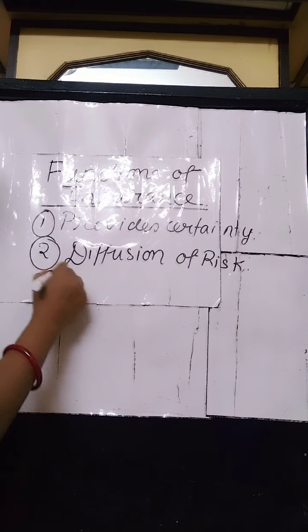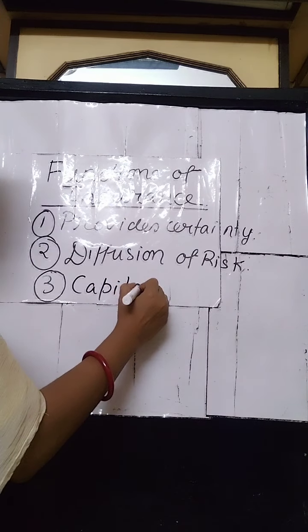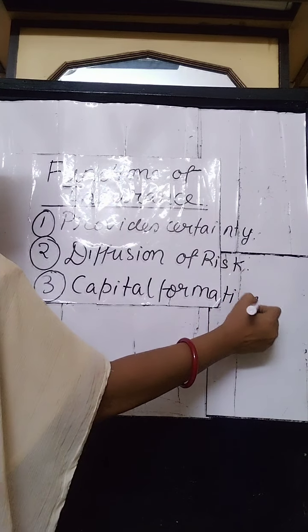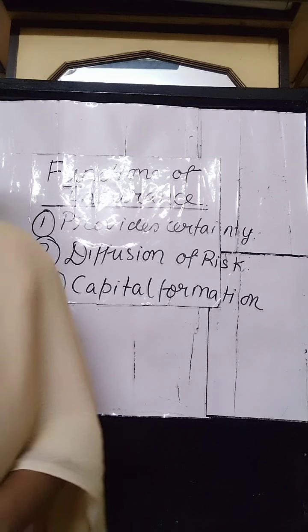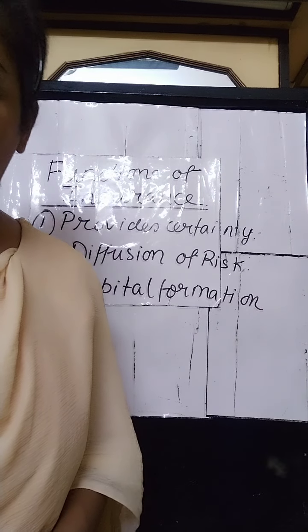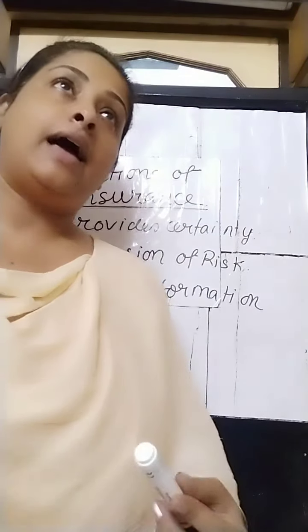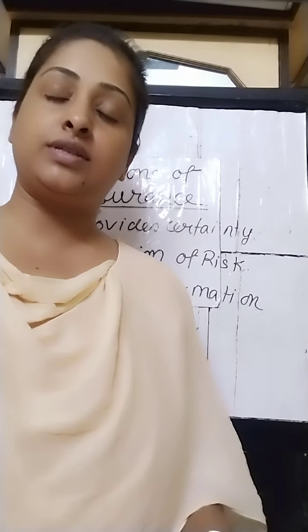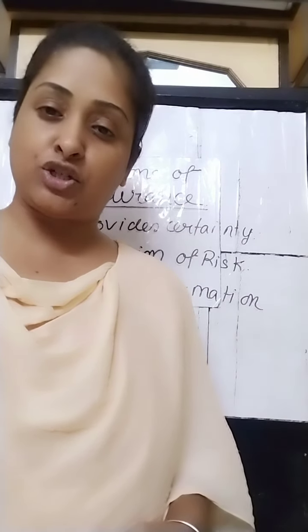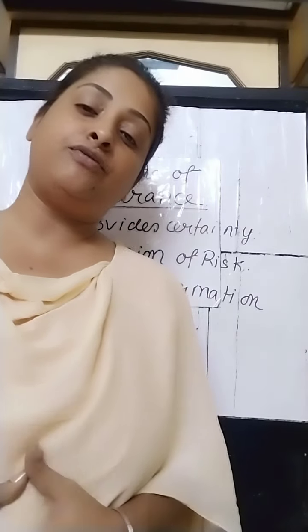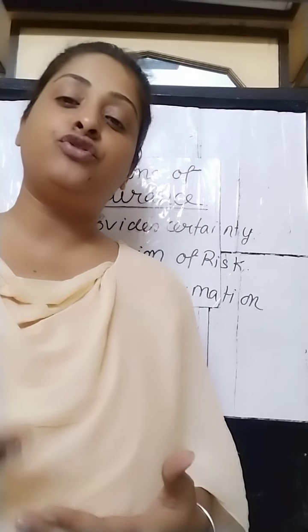The third function is capital formation. Insurance companies collect a huge amount of funds in the form of insurance premiums. The insurance companies invest these funds in industries and corporate sectors, which results in accumulation of capital — that is, capital formation. The premiums collected from the insured give rise to capital formation, which can help the growth and expansion of trade and industry.